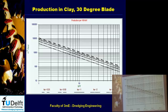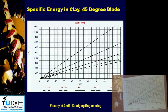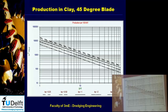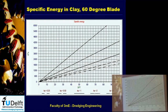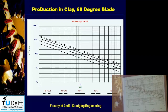This is a production graph made logarithmic because for clay you get nice straight lines that way. It shows production per 100 kilowatts — the equation from the previous slide reversed. If you have 100 kilowatt and know the SPT value, you can read the production in cubic meters per hour. Graphs are made for 30-degree, 45-degree, and 60-degree blades showing specific energy and production, so you can just read where you are without using the equations directly.